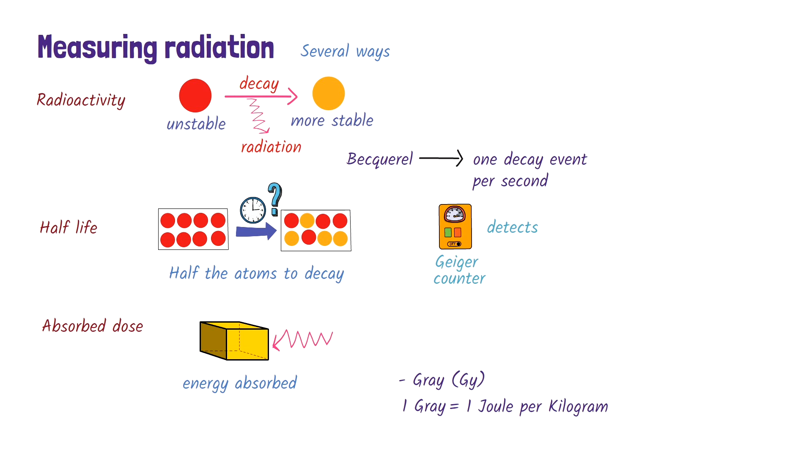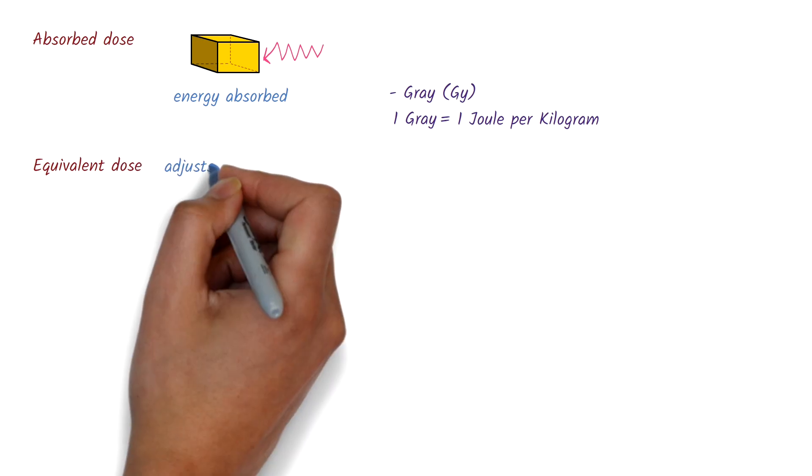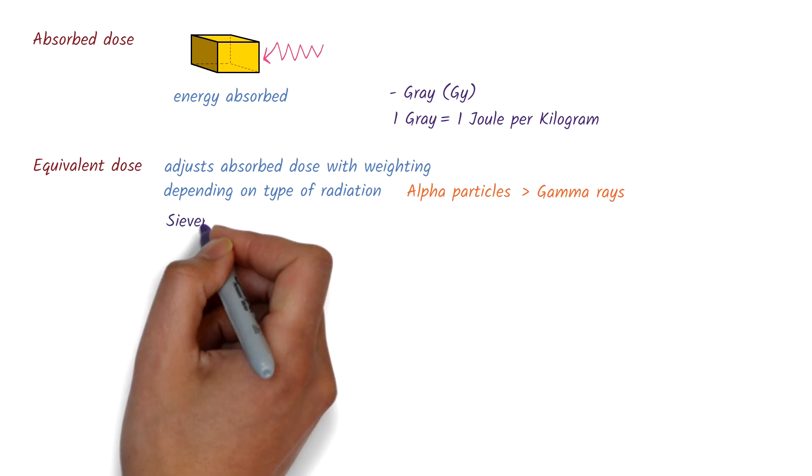But not all types of radiation cause the same amount of biological damage. That's where the equivalent dose comes in. It adjusts the absorbed dose with a weighting that depends on the type of radiation. For example, alpha particles are more damaging than gamma rays, so they're given a higher weighting. The equivalent dose is measured in sieverts.